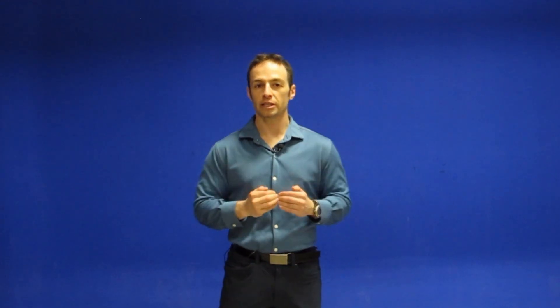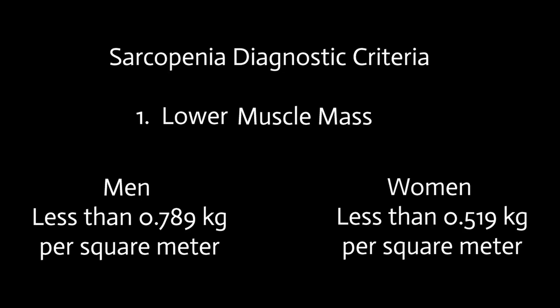So first, let's talk about what is sarcopenia. Sarcopenia is the loss of muscle mass, and there are three diagnostic criteria. One, of course, is lower muscle mass. That is scanned via a DEXA scan, and the cutoff for men is less than 0.789 kg per square meter. The cutoff for women is less than 0.519 kg per square meter. That's diagnostic criteria number one, loss of muscle mass.